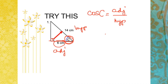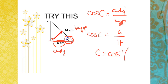We substitute: cosine C equals 6 over 14. To find angle C we take the cosine inverse of 6 over 14. Therefore C is equal to 64.6 degrees.